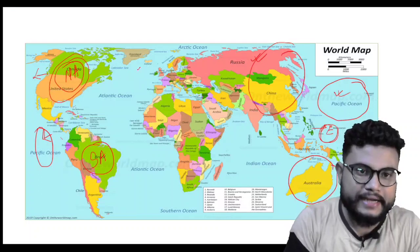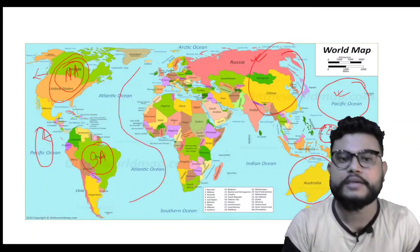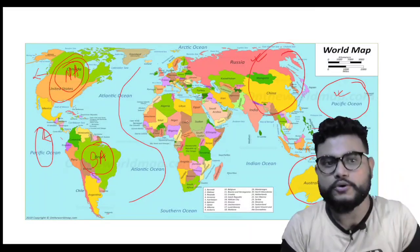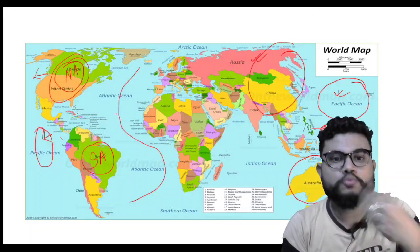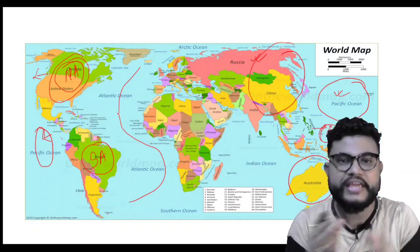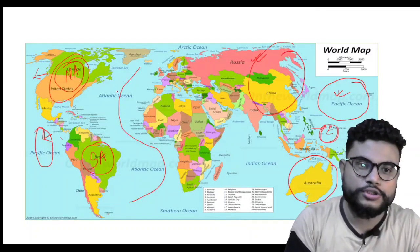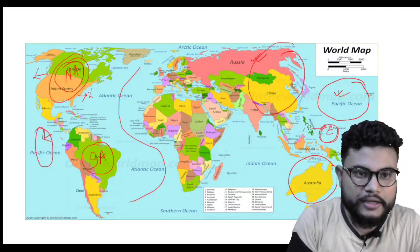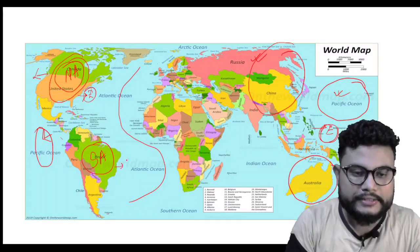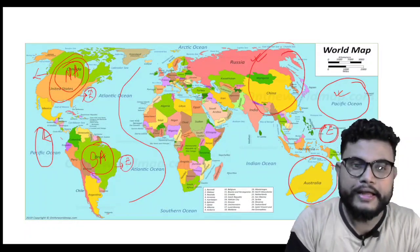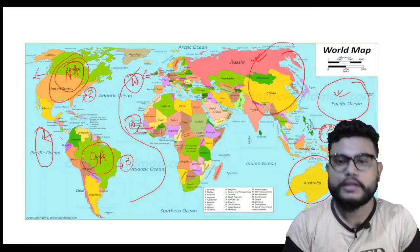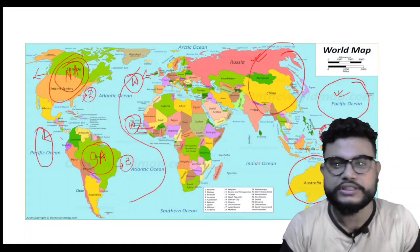Now we'll talk about the second largest ocean of the world, which is the Atlantic Ocean. This S-shape you can see — that is the Atlantic Ocean. Its location: it is to the east of North America and South America, to the west of Africa, and to the west of Europe.